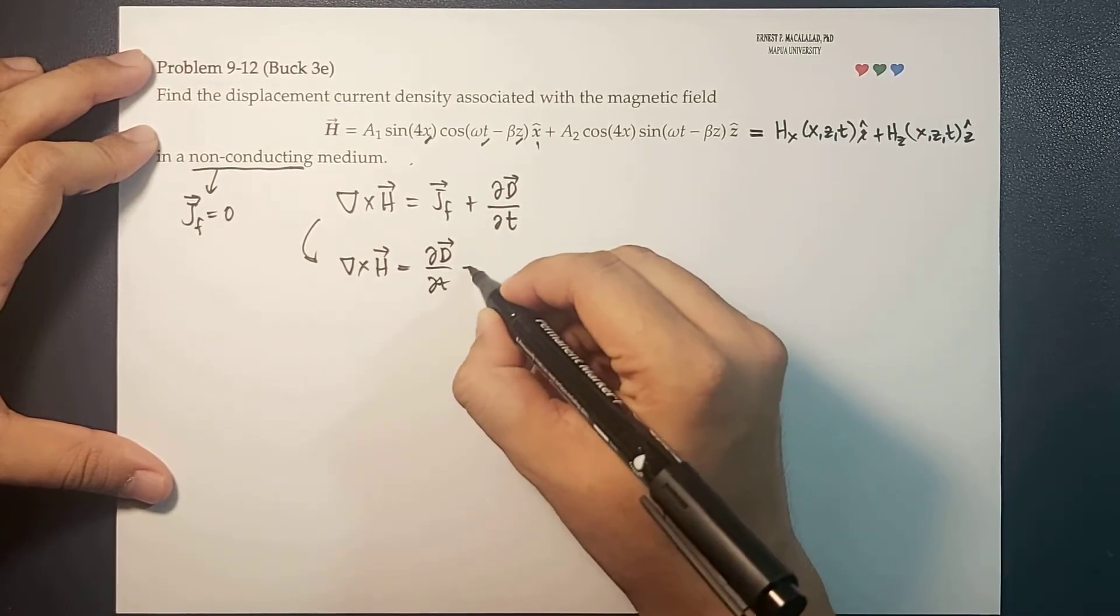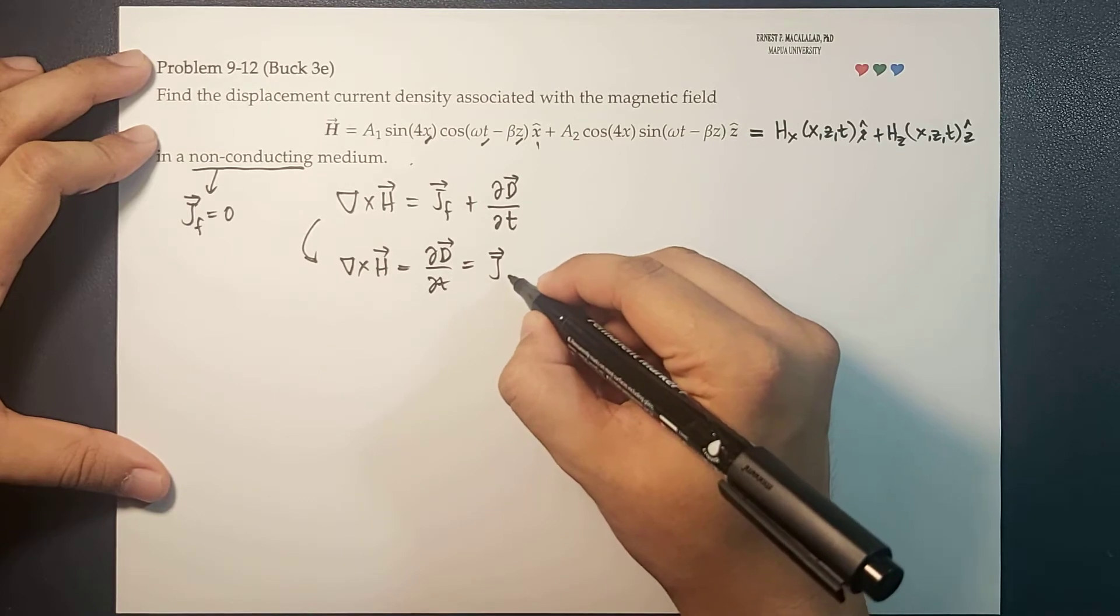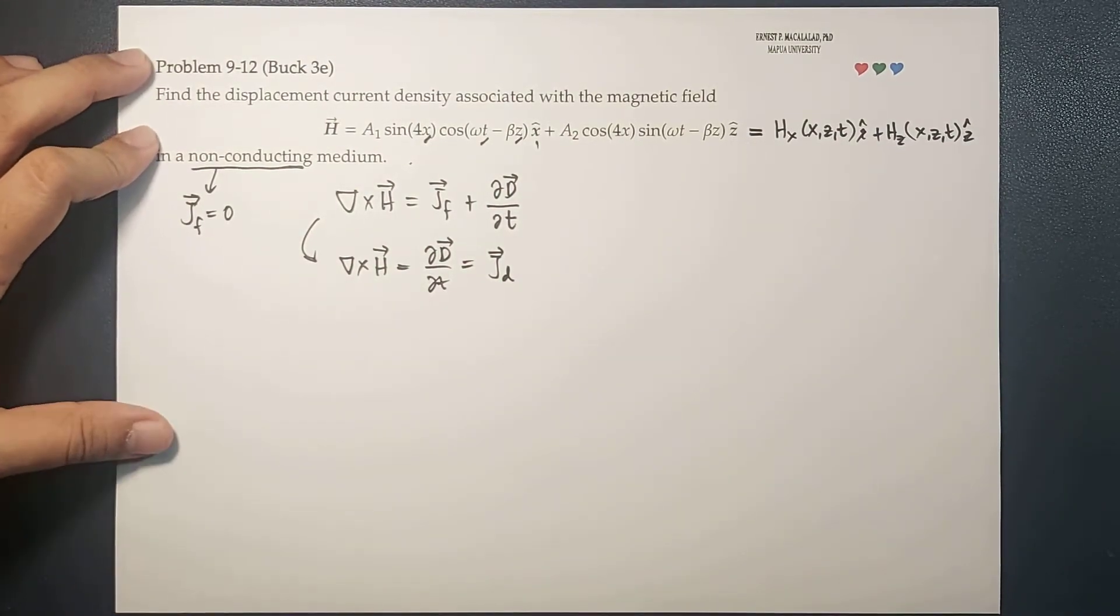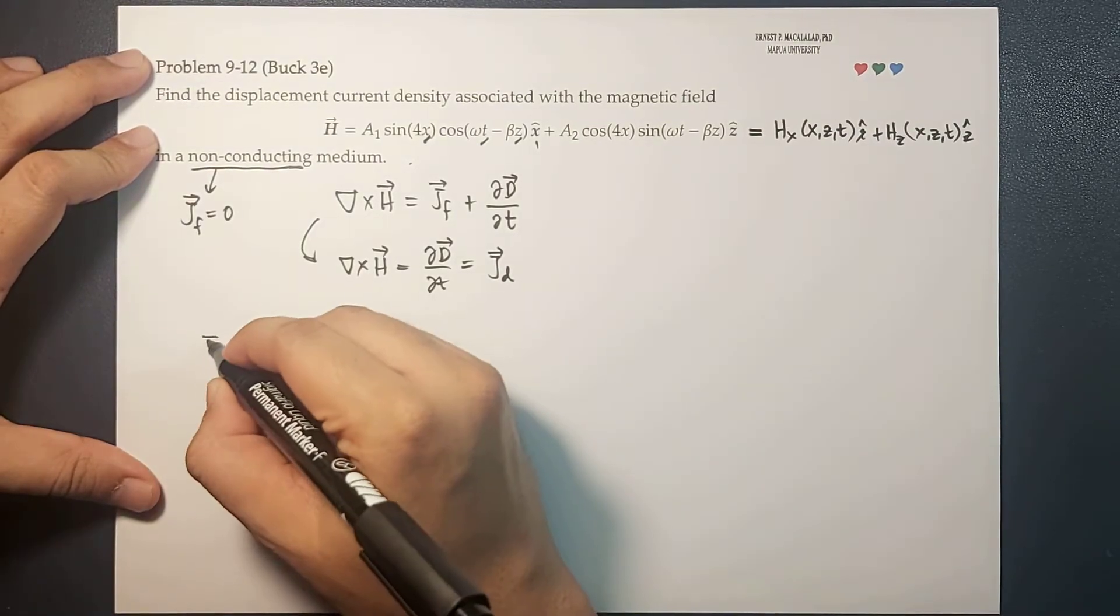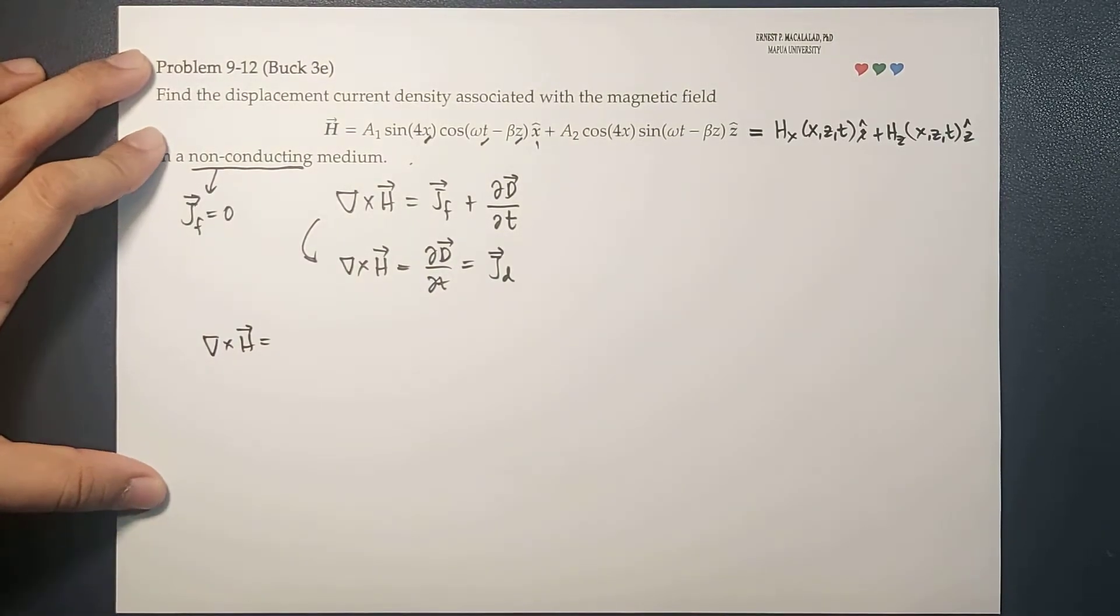with respect to time, which is your displacement current J_D. So all we need to do is get the curl of H. What is the curl of H? In Cartesian